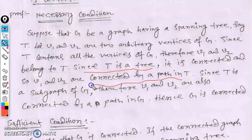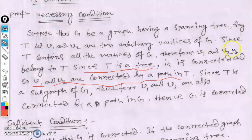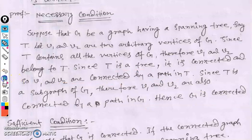Since T is a spanning tree of G, T is a subgraph of G — every vertex and edge of T belongs to G. Therefore v1 and v2 are also connected by a path in G, since G is the supergraph. Hence G is connected. Since any two vertices have a path in T and T is a subgraph of G, G must also be connected.